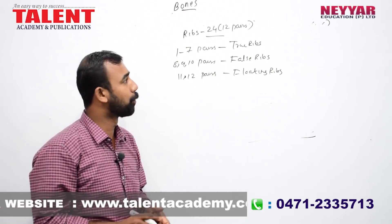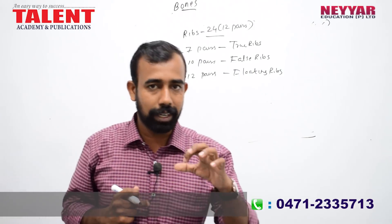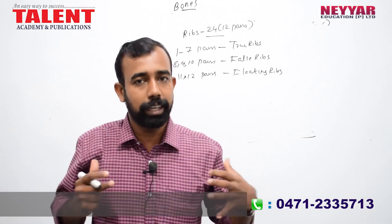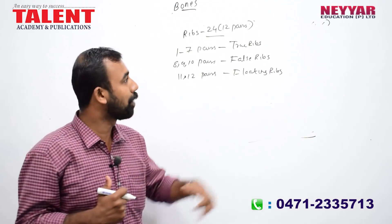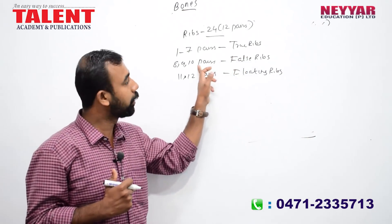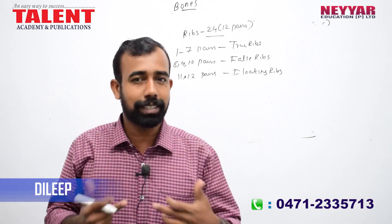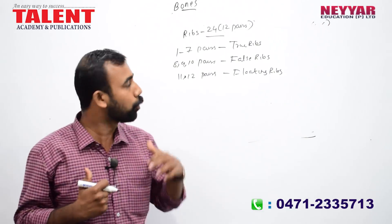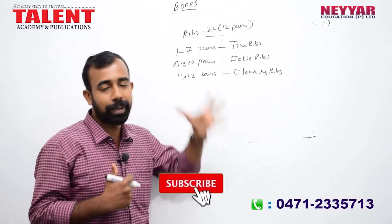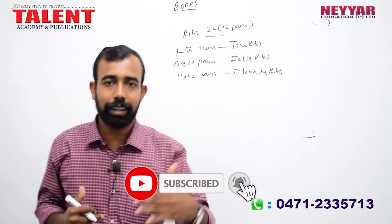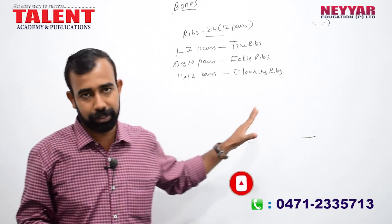There are 7 true rib pairs. The false rib pairs are 8, 9, and 10 — they attach indirectly. The floating ribs, pairs 11 and 12, have no sternal attachment and so they are called floating ribs.